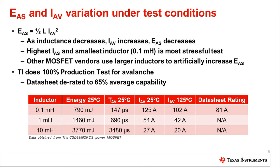Once we've measured the UIS current that the FET can handle up until failure, it's easy to determine the amount of energy dissipated into the FET during avalanche. If we assume all the energy stored in the inductor during the avalanche current ramp-up was dissipated into the MOSFET, that energy can be calculated from E = ½LI². EE 101 tells us the energy in an inductor equals one half the inductor value times the current squared. We measured 125 amps for this device — our CSD18502KCS, a 40V TO-220. Using this UIS current and the inductor value, we calculate the dissipated energy as 790 millijoules.